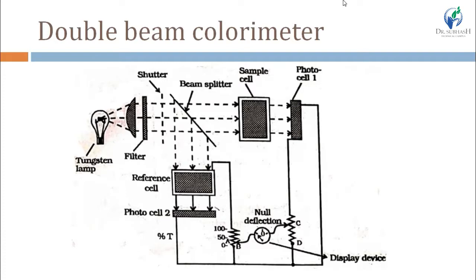This is the double beam colorimeter. The beam splitter splits radiation coming from the filter: part passes through the sample cell and another part passes through the reference cell. Two detectors are displayed — one for the sample cell and one for the reference cell. Other designs use only one detector where beams from sample and reference are combined before reaching the detector.